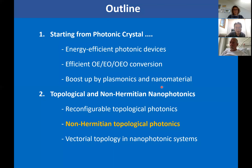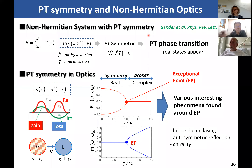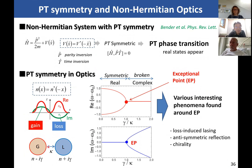Let's move on to non-Hermitian topological photonics. Even for non-Hermitian systems, if the Hamiltonian has PT symmetry, the system can have real eigenvalues. This symmetry can be realized very easily in photonics — for example, two cavities coupled to each other, one with gain and one with loss. Gain and loss are related by time-reversal symmetry, so this system has PT symmetry and can exhibit purely real eigenvalues under certain conditions. There occurs a phase transition between the real eigenvalue mode and the complex eigenvalue mode, separated by the exceptional point (EP).